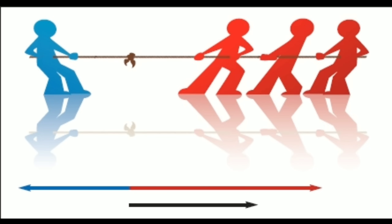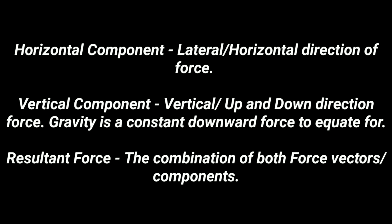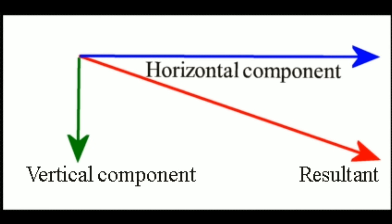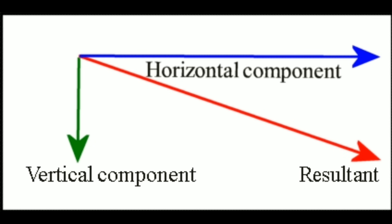This is a little bit oversimplified, so now we're going to look at force in multiple directions. First, we have the horizontal component, which is the lateral or horizontal direction of the force. The vertical component is the vertical up-and-down direction of force — gravity is a constant example of downward force to account for. And we have the resultant force, which is a combination of both force vector components. We can see a horizontal component and a vertical component going down, which leads to a resultant force downward at a 45-degree angle.